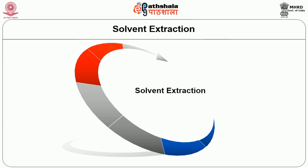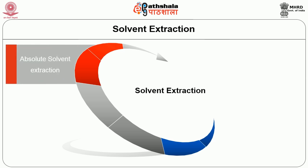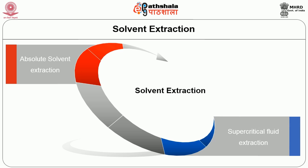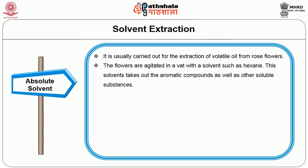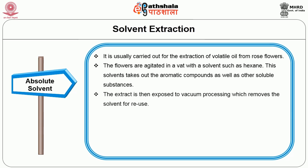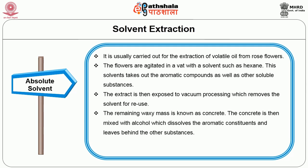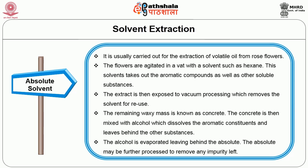The next method is solvent extraction. It is either carried out by using various solvents or fats, and can be classified into two types: absolute solvent extraction and supercritical fluid extraction. In absolute solvent extraction, it is usually carried out for the extraction of volatile oil from rose flowers. The flowers are agitated in a vat with a solvent such as hexane, which takes out the aromatic compounds as well as other soluble substances. The extract is then exposed to vacuum processing which removes the solvent for reuse. The remaining waxy mass is known as concrete. The concrete is then mixed with alcohol which dissolves the aromatic constituents and leaves behind other substances. The alcohol is evaporated leaving behind the absolute, which may be further processed to remove any impurities.